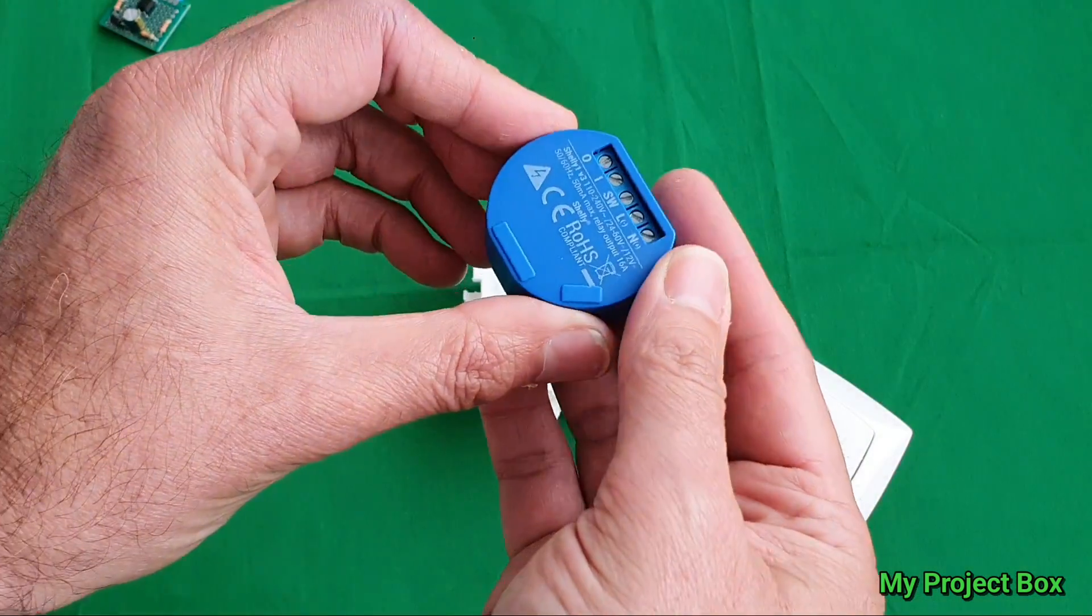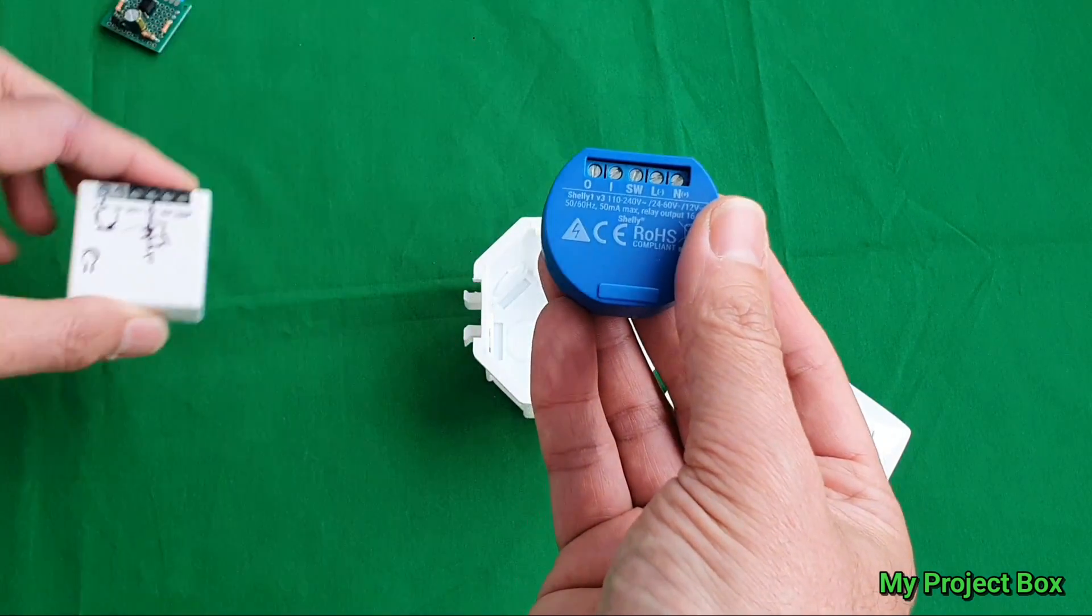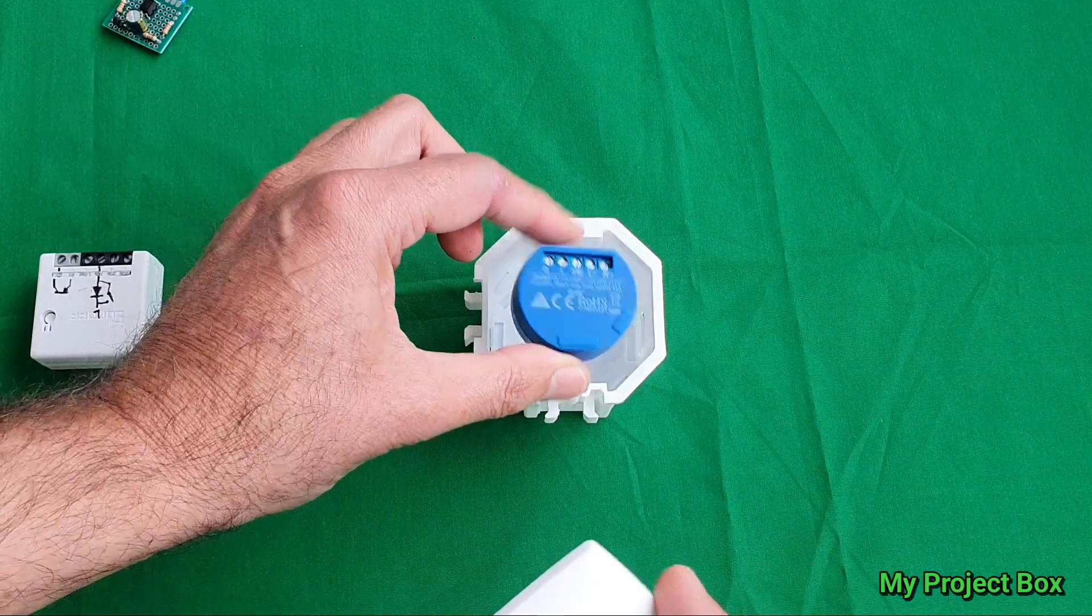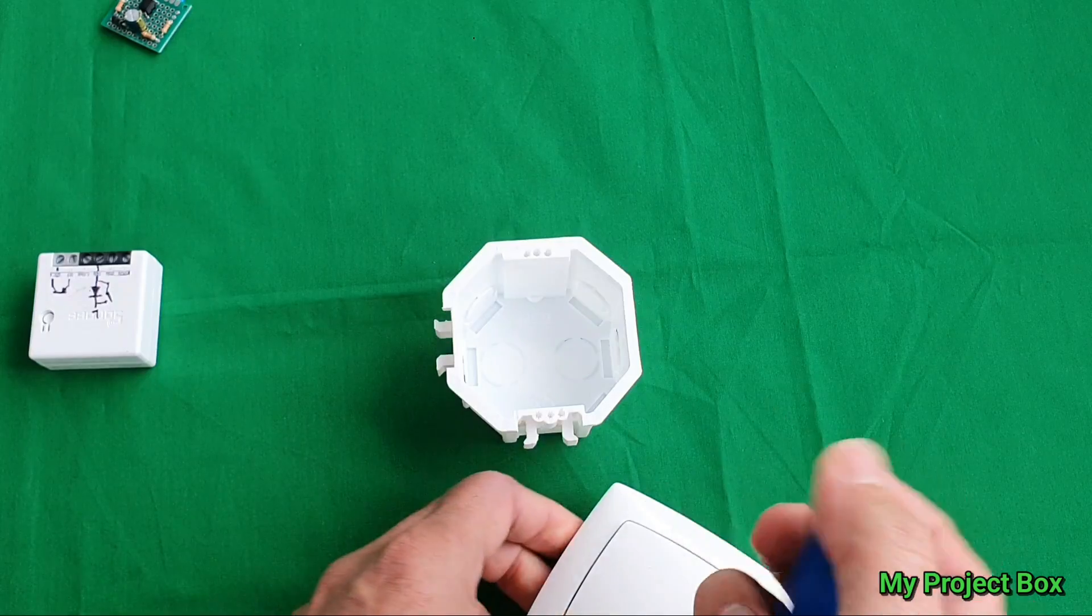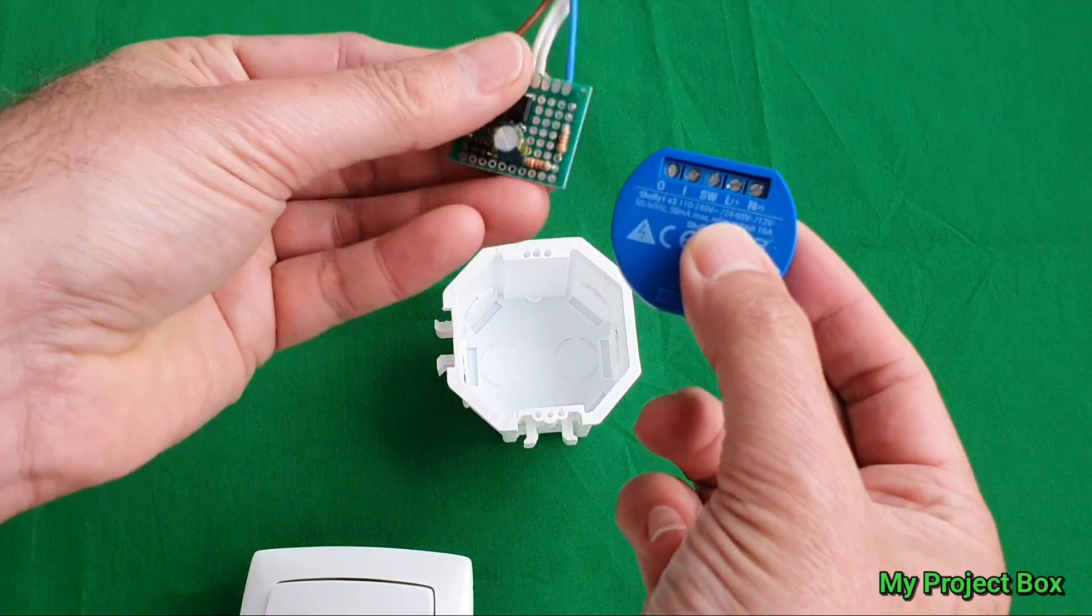But in this video I want to look at the Shelly 1 which is a lot smaller than the Sonoff Mini and we'll see if we can put it behind the light switch. It certainly fits in there, there's plenty of room. Or if we can actually put it behind the light fixture itself with a similar type of circuit hack.